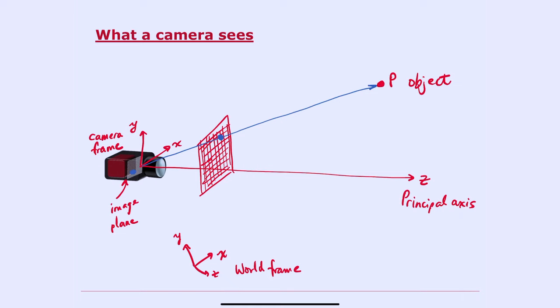Now these pixels tell us information about where the object is relative to the camera. Again, we're going to have to do some additional work to find out where the object is relative to the world.